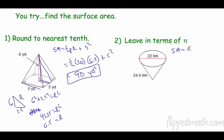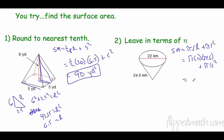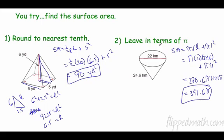For the cone practice problem: surface area equals πrl + πr². The radius is 11 and the slant height is 24.6. That gives π(11)(24.6) + π(11²) = 270.6π + 121π = 391.6π. The answer is left in terms of π as requested.